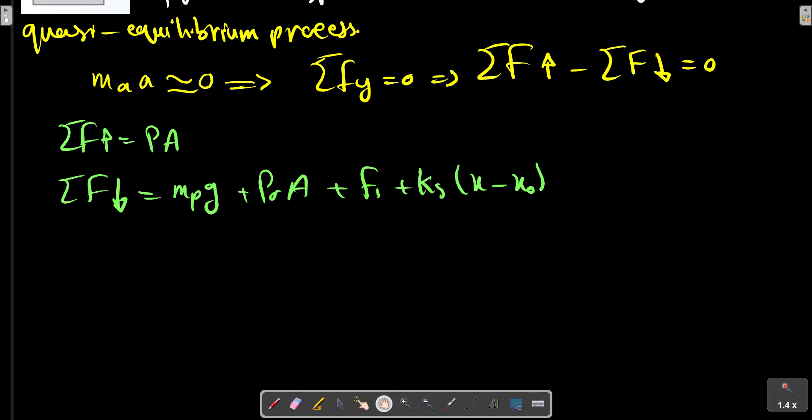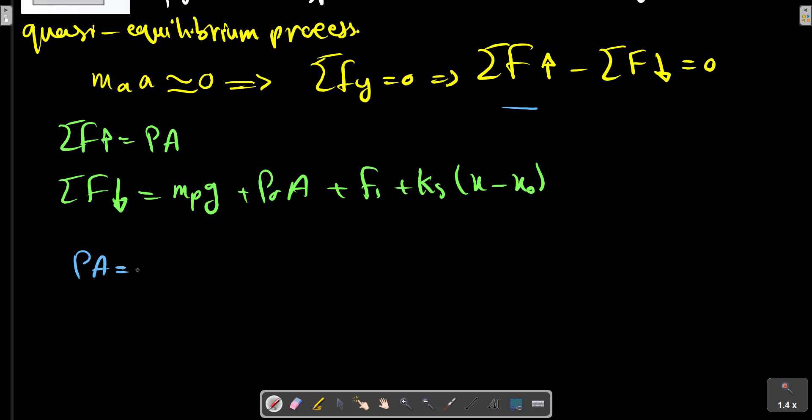So the expression should satisfy these equations: P·A equals mp·g plus P0·A plus F1 plus k·(X minus X0). We divide it by A and have this relation.